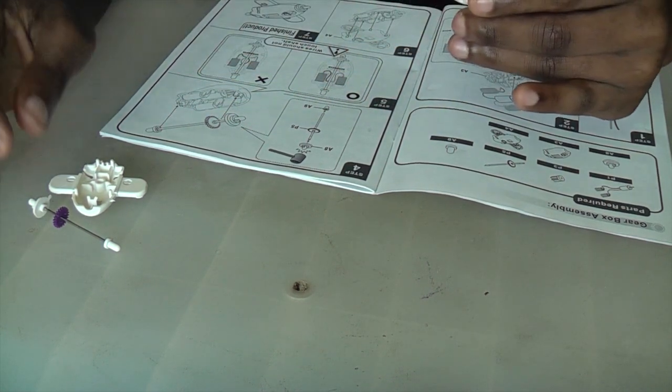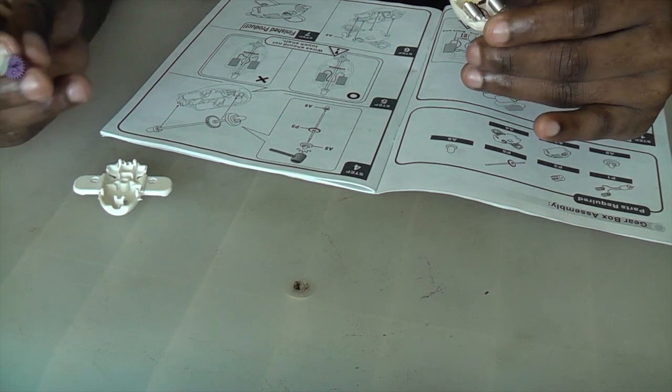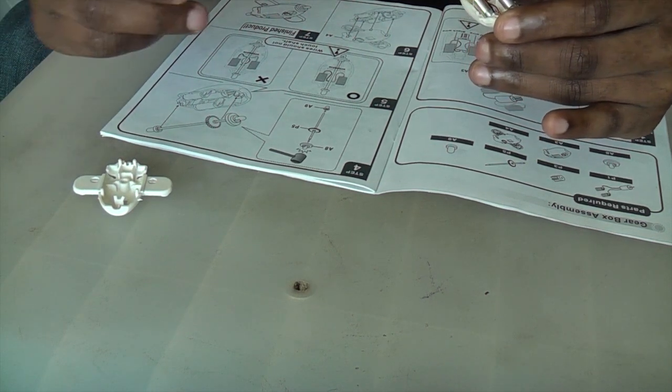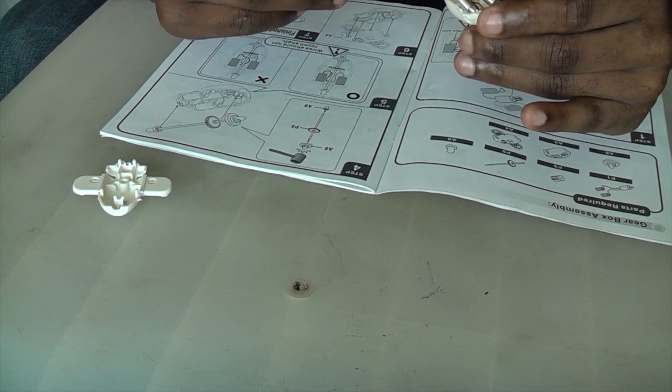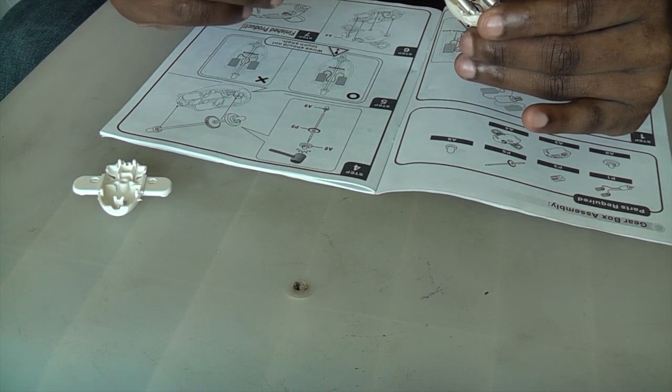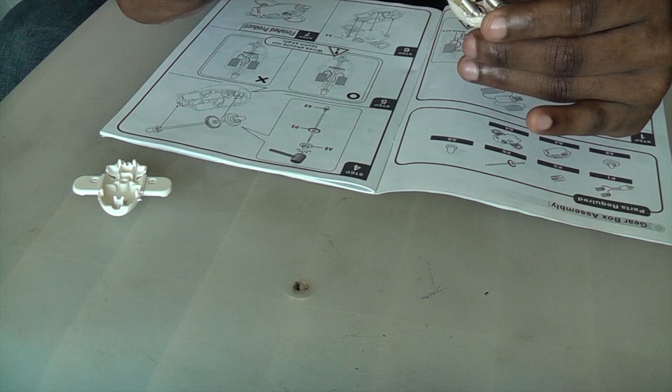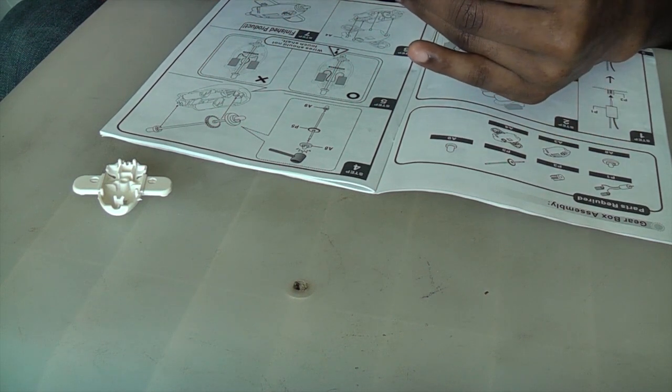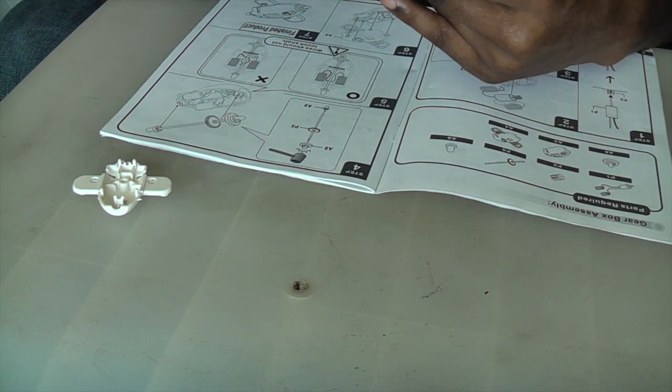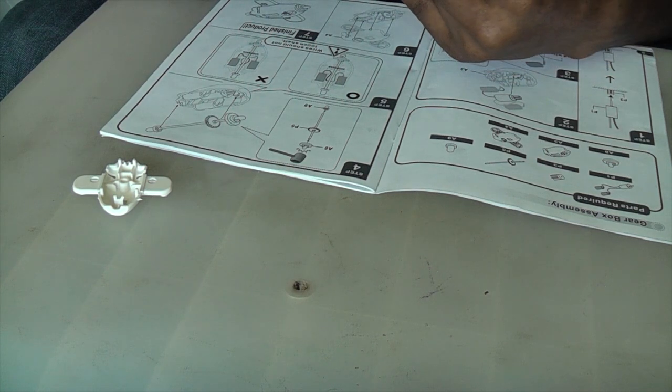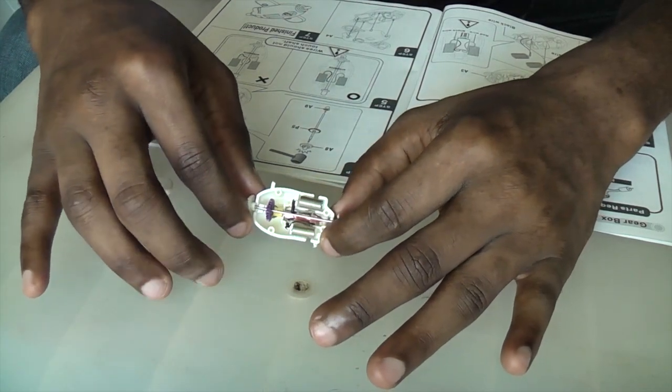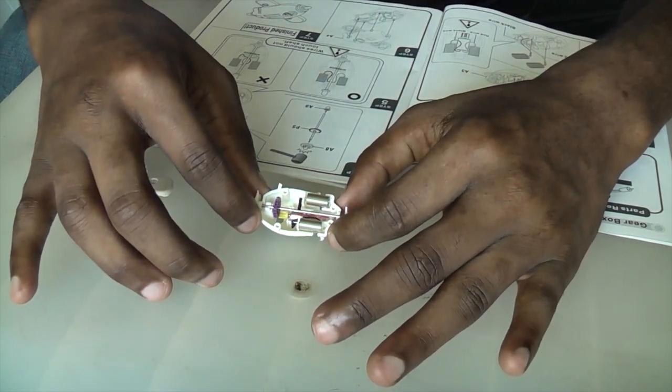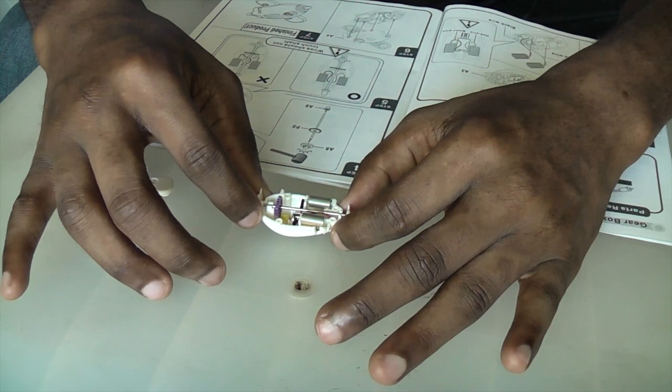Both are in place. Now you take the shaft and you place it with the purple gear nearer towards you and place it in, just like that. So right now, your bottom shell shall look something like this.